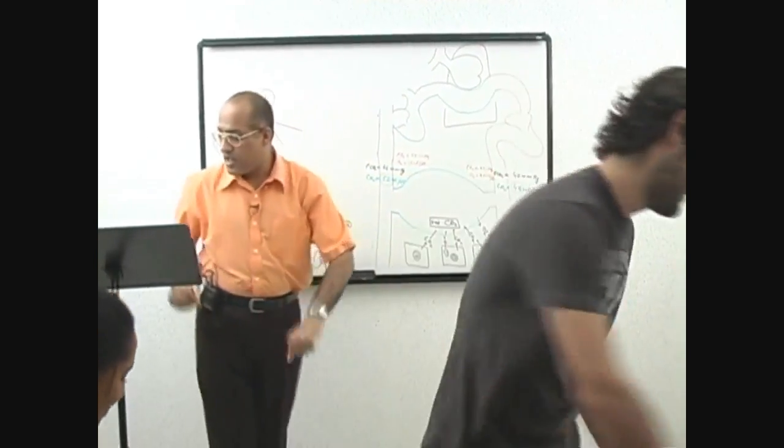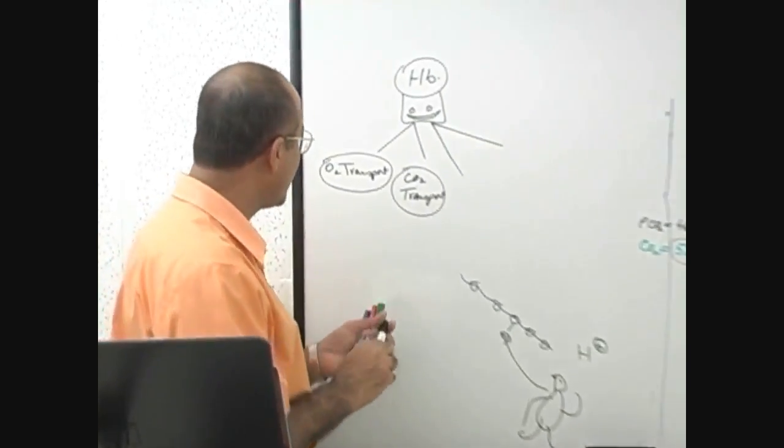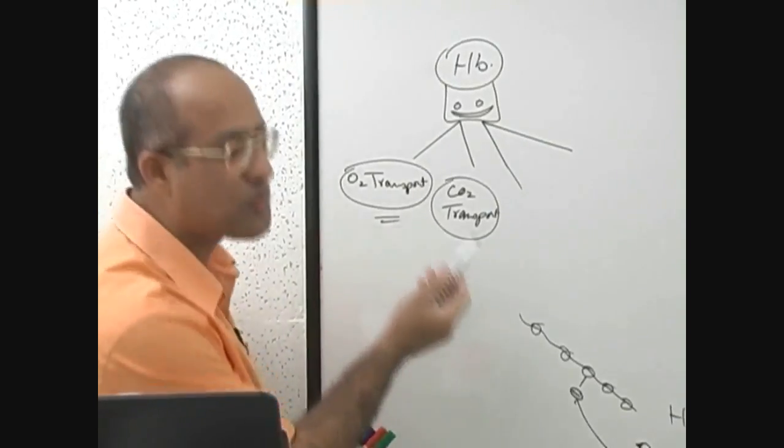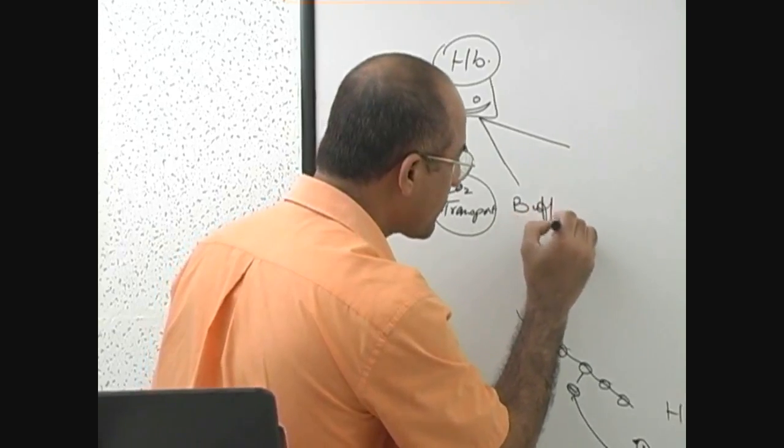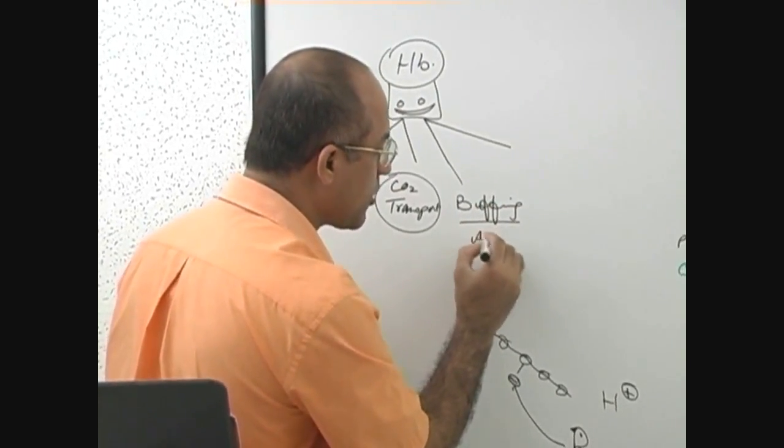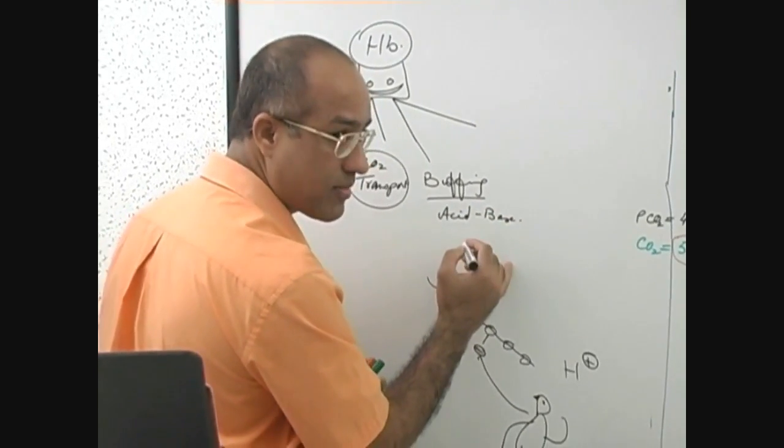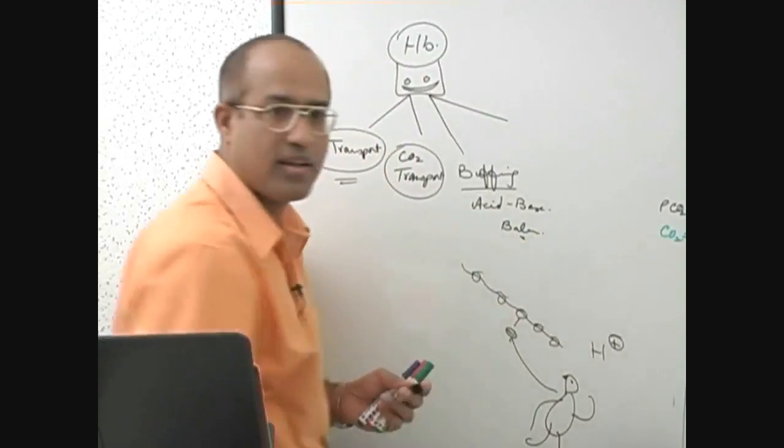So please you should know four functions of hemoglobin. This is a kid's business, even high school students will say there is oxygen transport and carbon dioxide transport. It is a buffering protein. They play a role in acid-base balance. This is the first chapter of biochemistry, acid-base balance, pH, buffers.